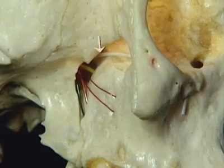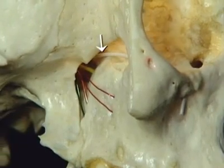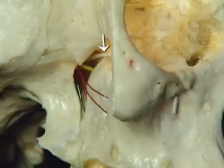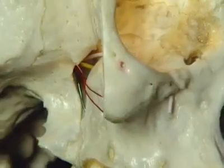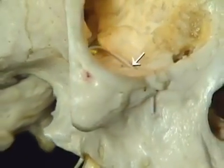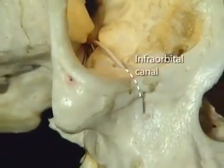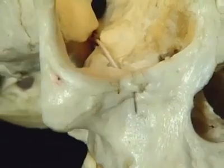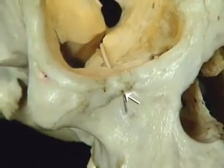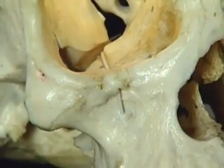The infraorbital nerve passes forwards across the inferior orbital fissure and enters a bony tunnel in the floor of the orbit — the infraorbital canal. It emerges below the orbital margin to innervate the front of the cheek.